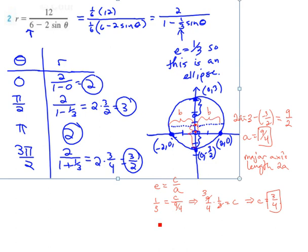So to find B we can use the fact that for ellipses C squared is equal to A squared minus B squared. And if C is three fourths then C squared is nine sixteenths. A we found to be nine fourths and we square that we get 81 sixteenths. We need to subtract B squared from that.